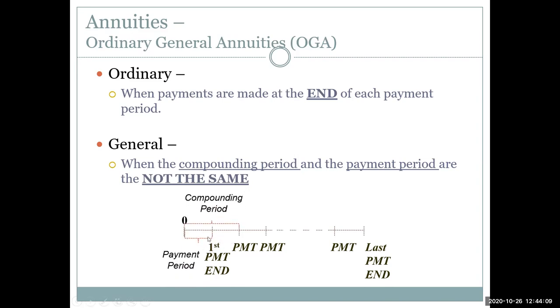For ordinary general annuities, 'ordinary' still means the payment is at the end of the period. 'General' means the compounding period and payment period are not the same — for example, monthly payment period but quarterly compounding. That mismatch requires an extra calculation.